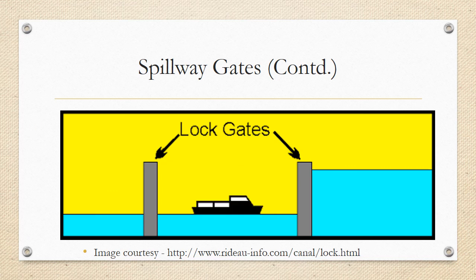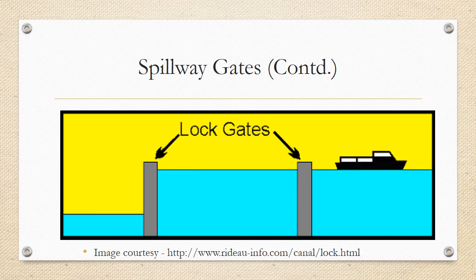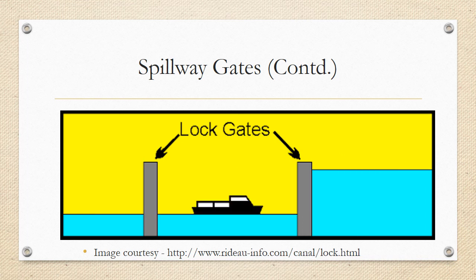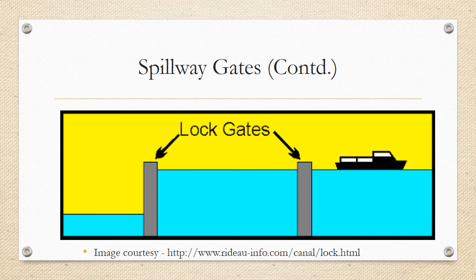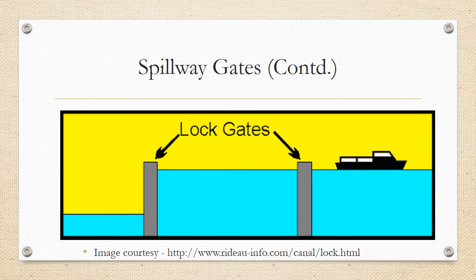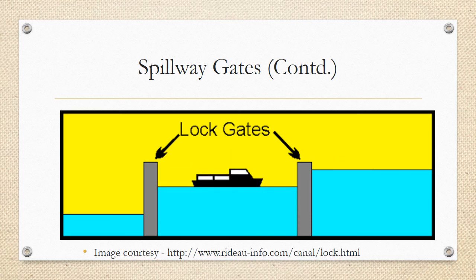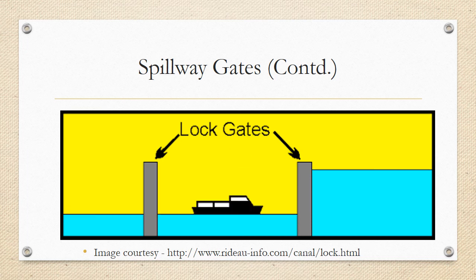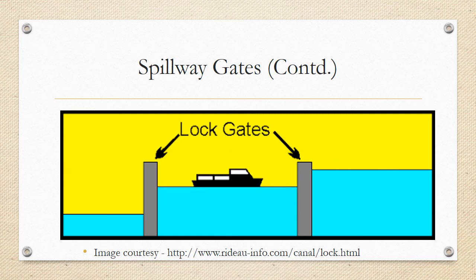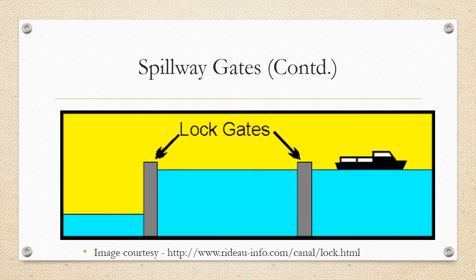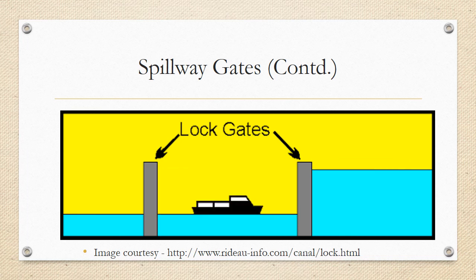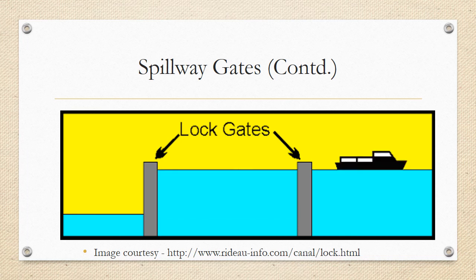This is a GIF image showing the function of a log gate. The water levels on either side of the log gate are not equal, and that is exactly why these log gates are placed in that position. Initially the water levels are brought to the same level, and then the gates are opened so that the ships or boats can pass through — that is the application of a log gate.